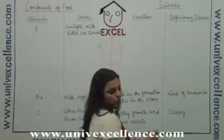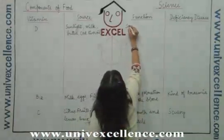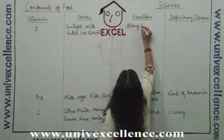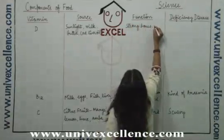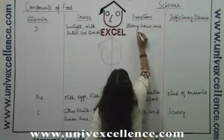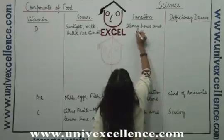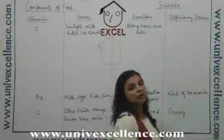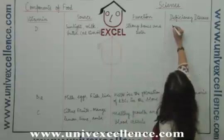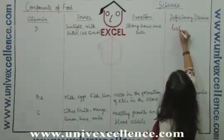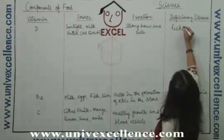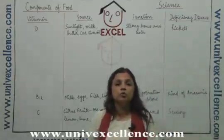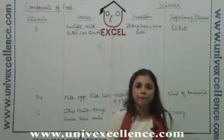Vitamin D is responsible for the formation of strong bones and teeth. Deficiency of vitamin D results in a disease mainly in children which is called rickets. In this disease, the bones become soft and so they bend.